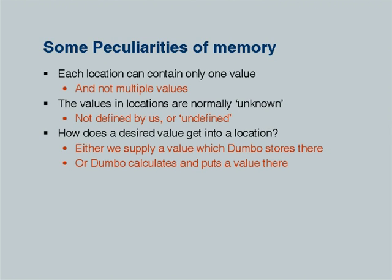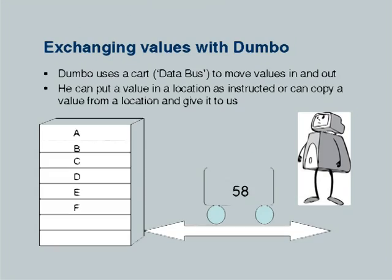The power of an assignment statement and the power of the input statement are known to us, but what we often fail to appreciate — and therefore our students also fail to appreciate — is that there is absolutely no third way for a value to get into a designated drawer. A value can get into a drawer by an input operation or by a compute operation. If the values are undefined at the beginning, either we supply a value which Dumbo stores in that location, or Dumbo calculates a value and puts a value there.